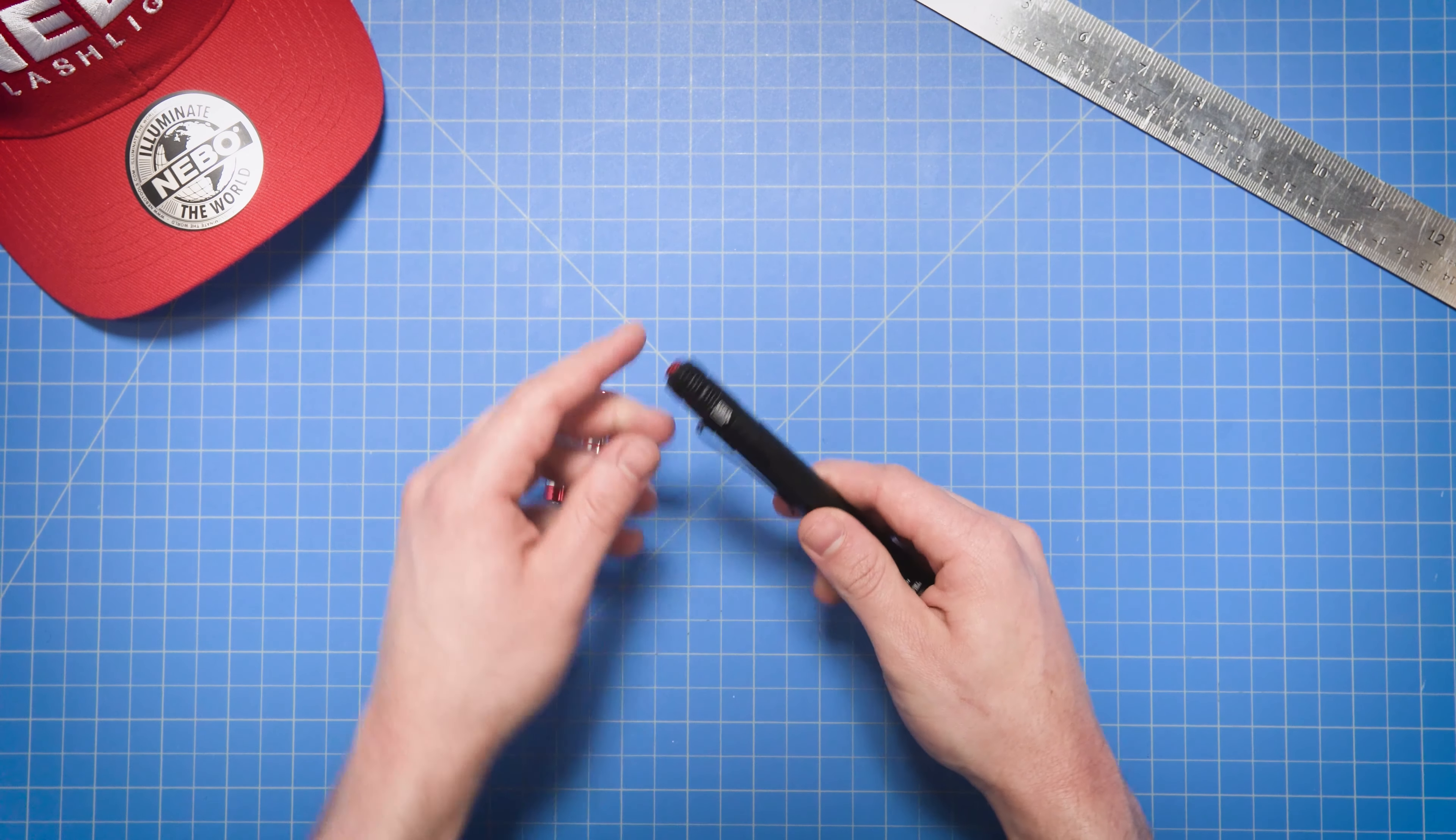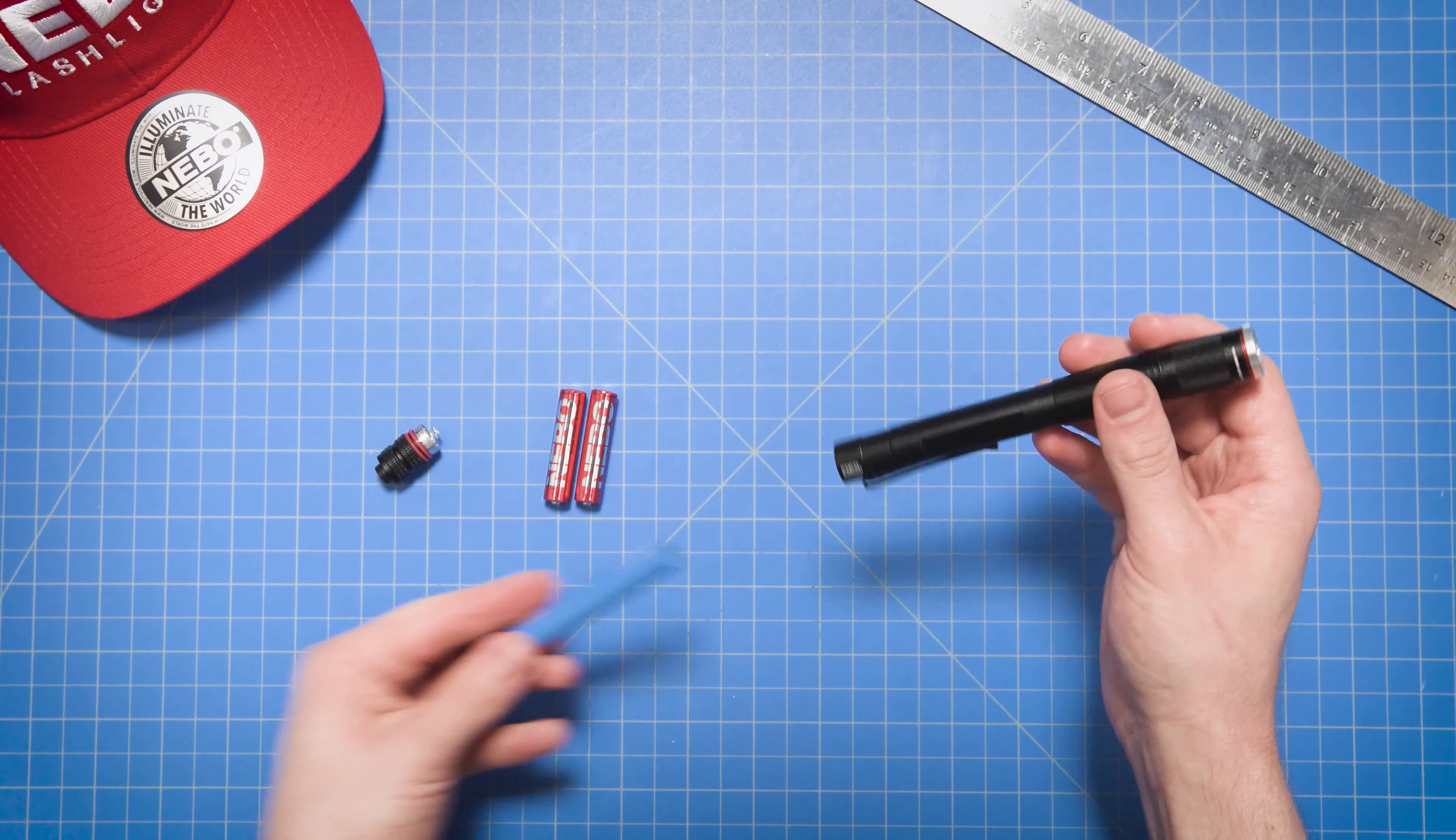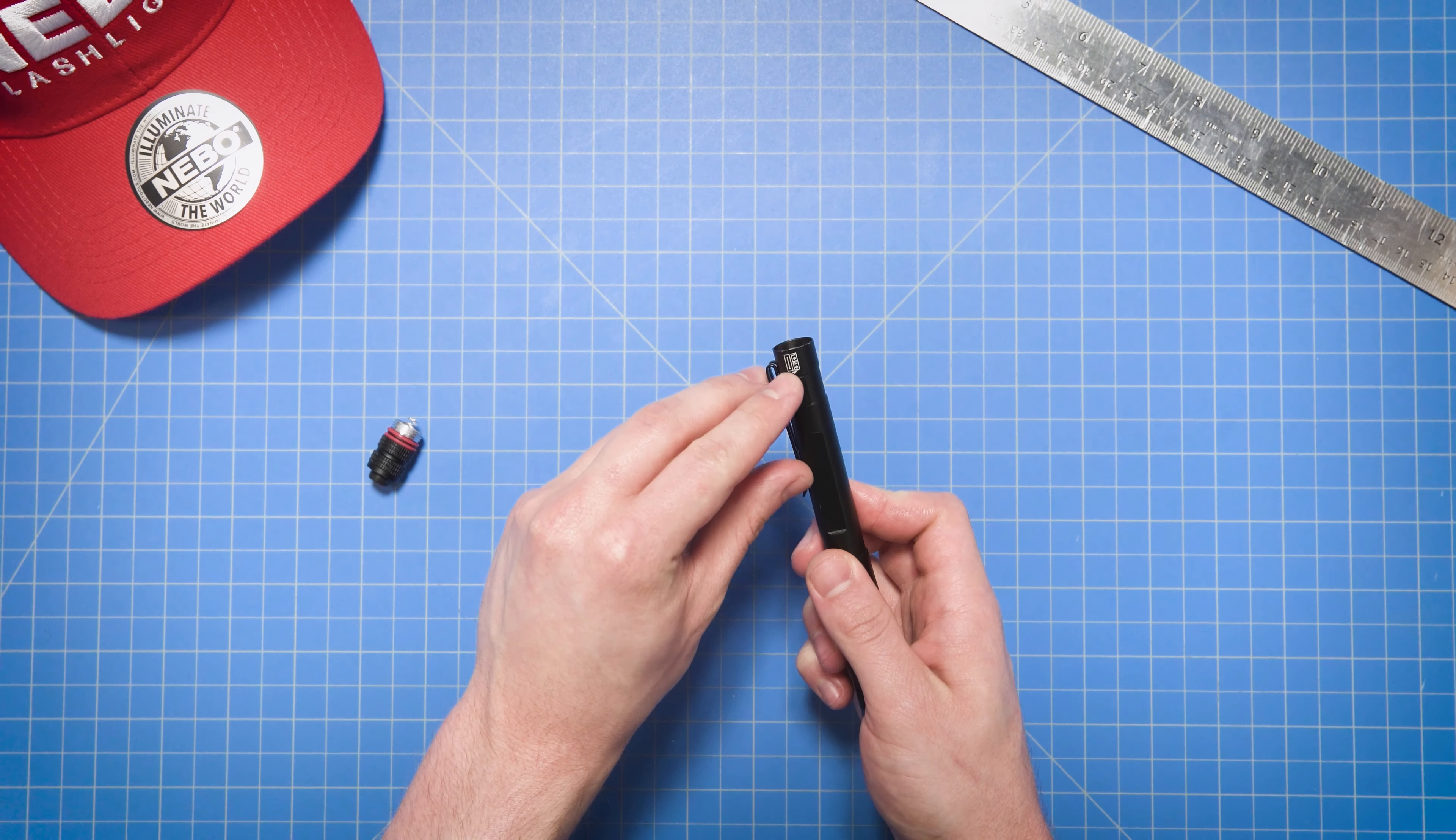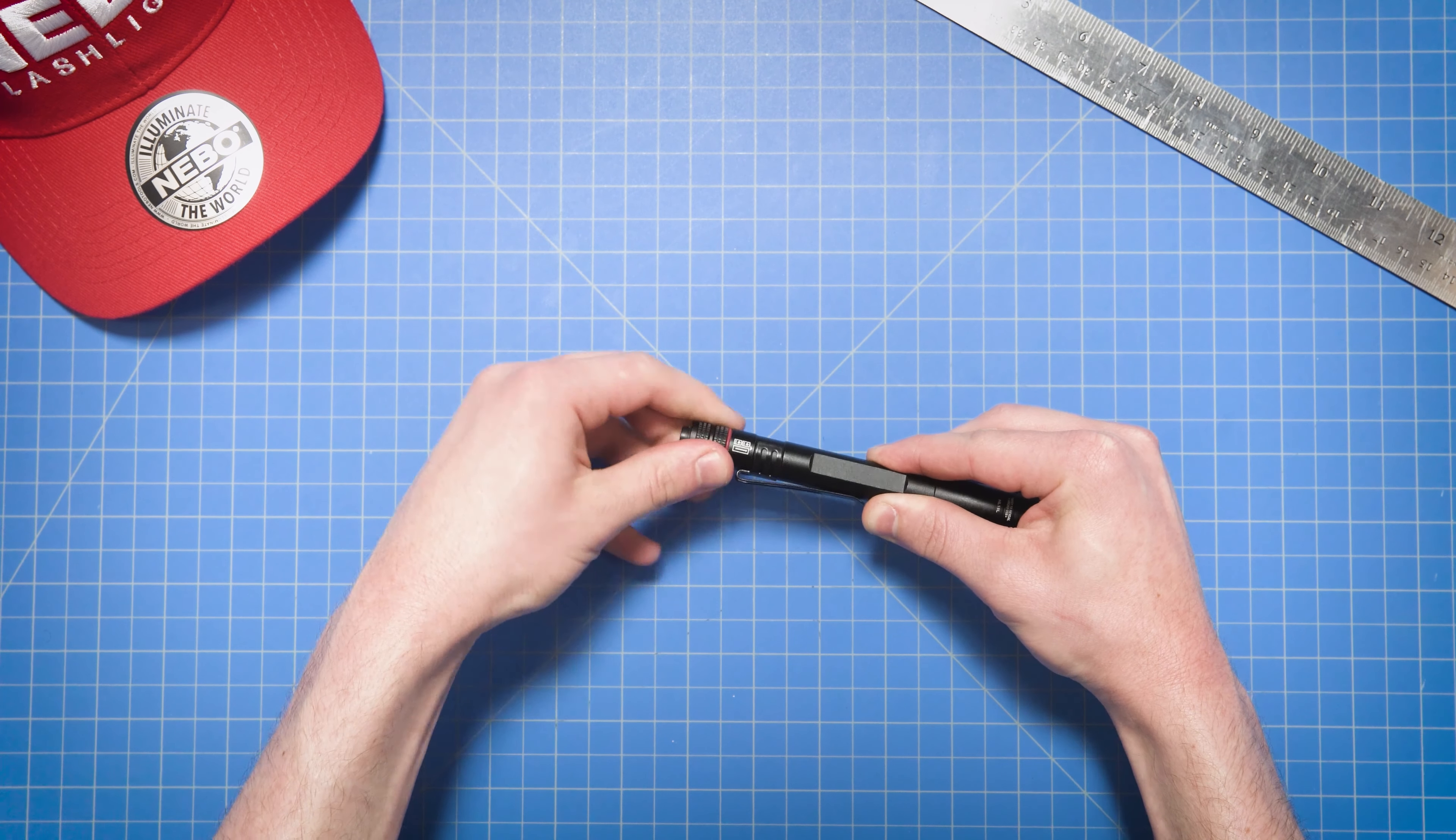To change the batteries, simply unscrew the button cap at the back of the light by turning it counterclockwise. Tilt the light to slide the 10850 rechargeable battery out and replace with two alkaline AAA batteries following the instructions on the back of the light here. Once the replacement batteries are in, screw the button cap on clockwise until tight.